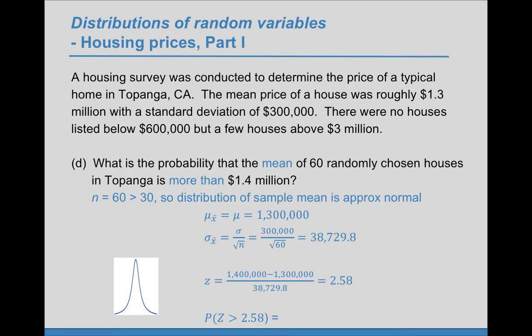And now since we want more than, we're going to be looking for the area to the right of that value. So using whatever technology you prefer. If you're using TI, you can do second vars or second distribution and choose normCDF. Here's our lower bound. Our upper bound is some very large number, like 6, and we'll get 0.0049.